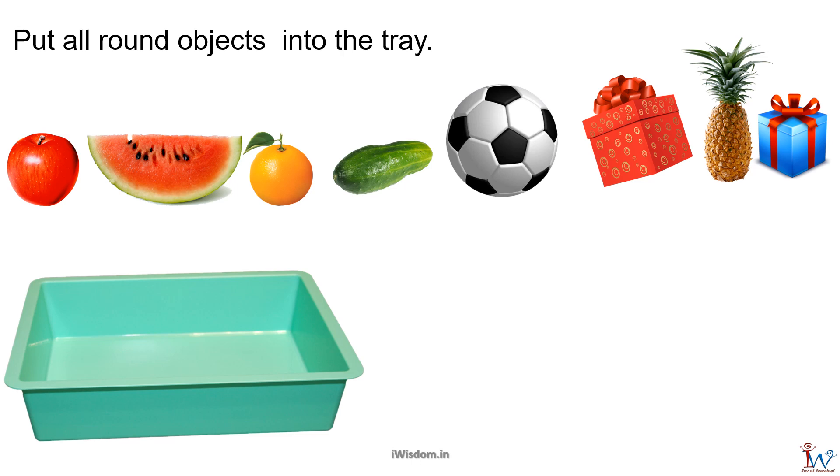Well Mr. Wiz, not only objects come in different shapes and sizes, they are colorful too. The first one is an apple and is round in shape, so I am placing it in the tray. Next one is a watermelon piece, it is not round. Then comes orange. It is round as well, so I am placing it in the tray.